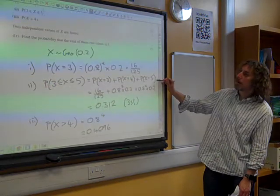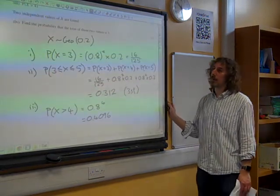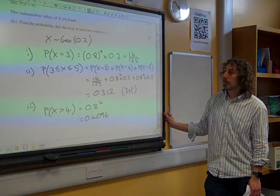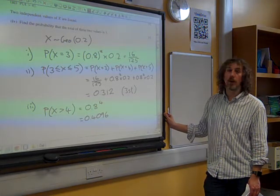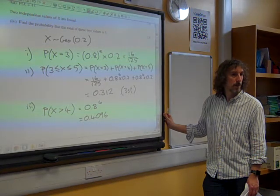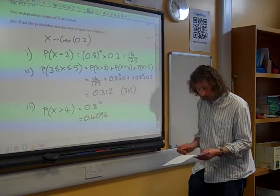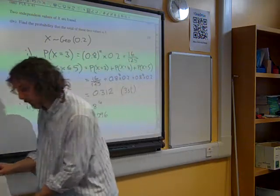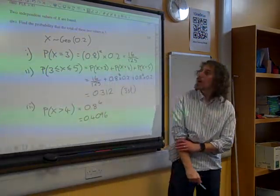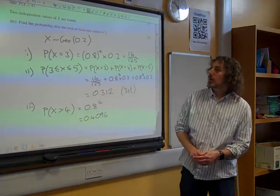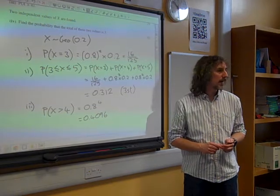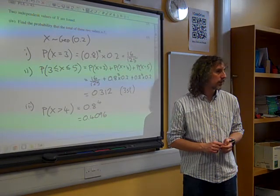And then it says two independent values of X are found. Find the probability that the total of these two values is 3. This is linking some other probability stuff in here. We've got quite a lot that we need to work out for this, haven't we? Two independent values are found. How could we get 3 from the two values?